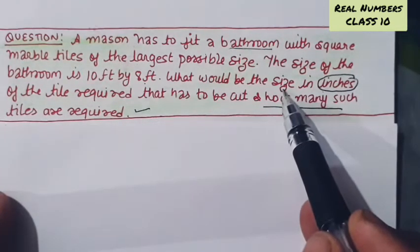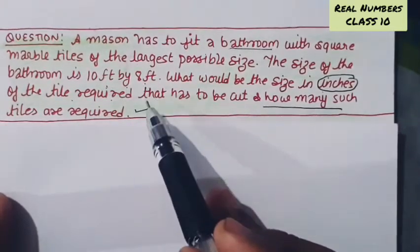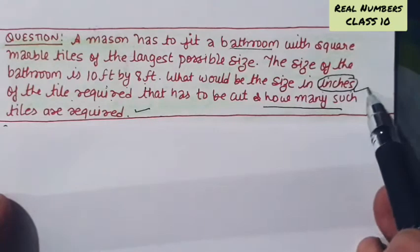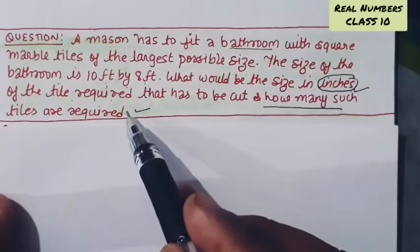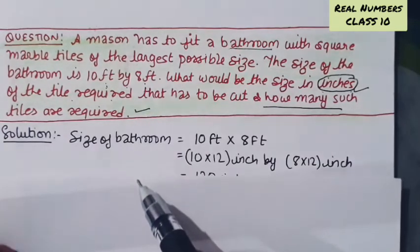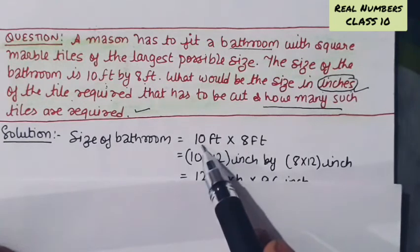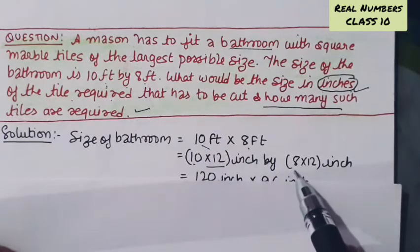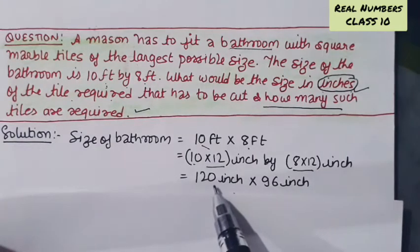First of all, the size of the bathroom is 10 feet by 8 feet. When you change it to inches, because in inches you have to answer, one foot equals 12 inches. So 10 feet means 10 times 12 inches, and 8 times 12 inches. When you solve it, it will be 120 into 96 inches. So the size of the bathroom is 120 by 96.